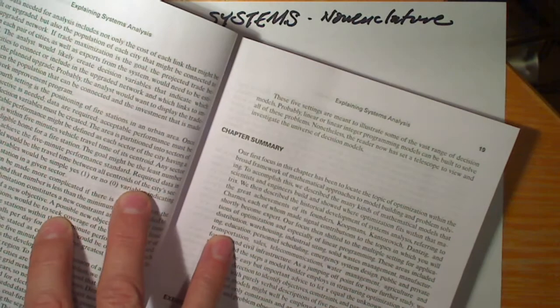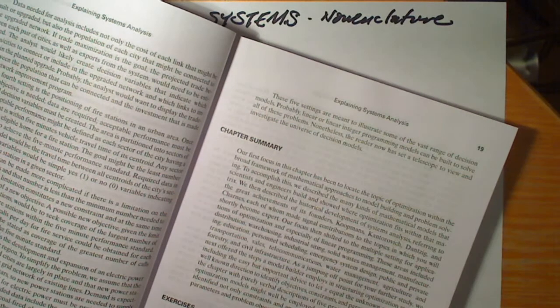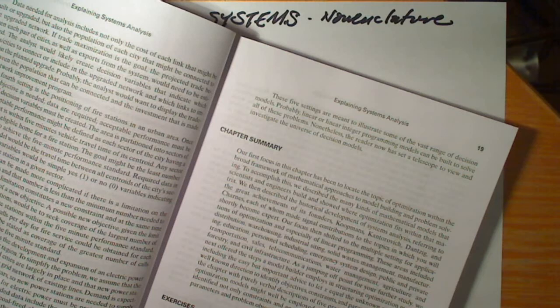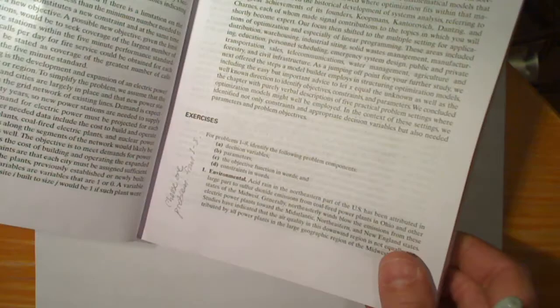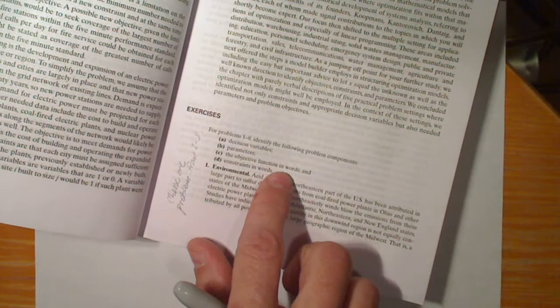In particular, we have these problems at the end of the first chapter that ask us to identify decision variables, parameters, the objective function in words, and the constraint in words.